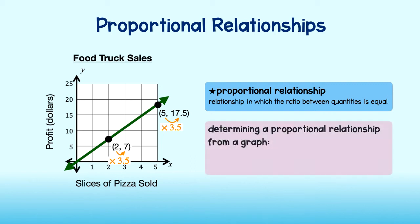The second way to tell if a relationship is proportional is by looking at the graph. If a graph is a straight line that passes through the origin, the relationship is proportional.